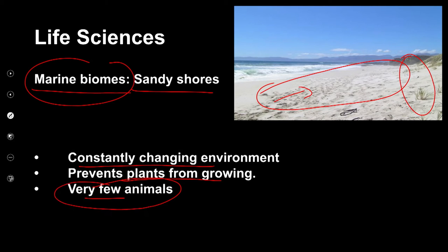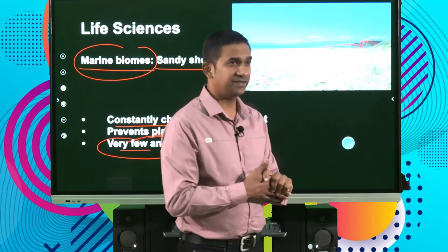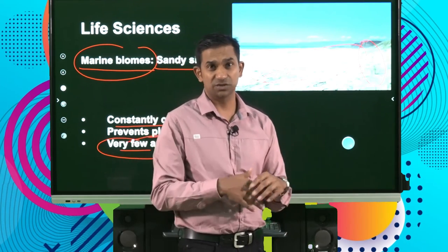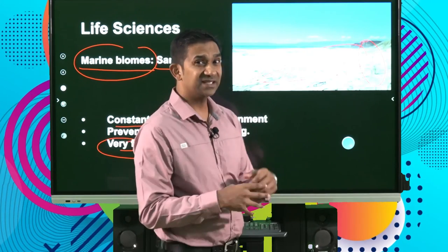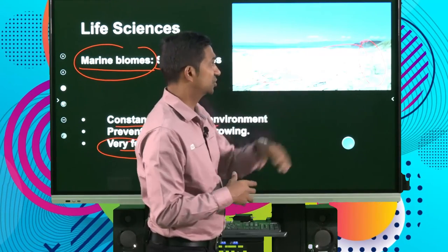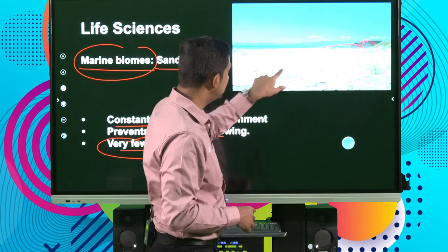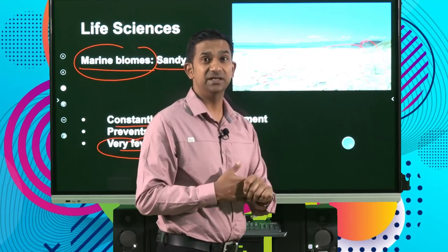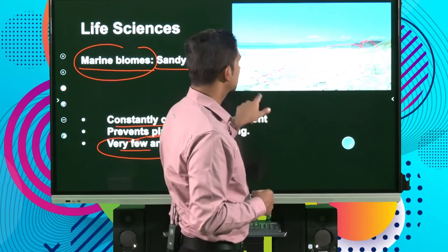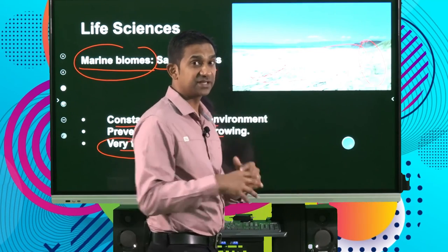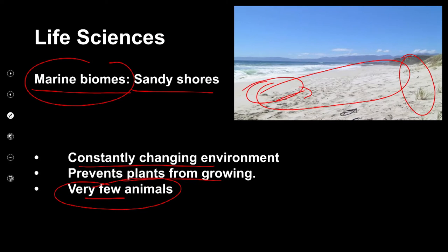Sandy shores are a constantly changing environment depending on the tides. When the high tide comes in and low tide moves out, it affects the shoreline. Very few animals are found along these coastal regions. Humans have used some of these shores for 4x4 off-road driving, which has affected the landscape and the marine invertebrates — like crabs — that live there.